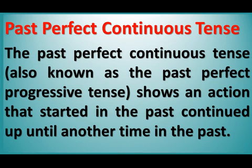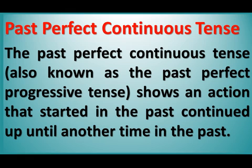Past perfect continuous tense, also known as the past perfect progressive tense, shows an action that started in the past and continued up until another time in the past.